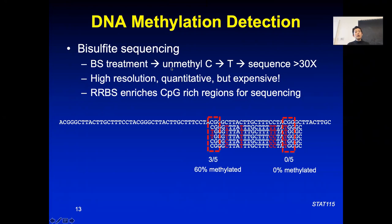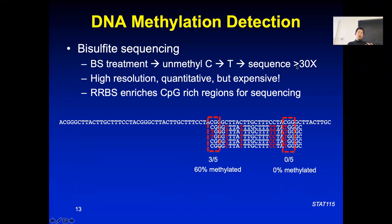During this bisulfite treatment, all the unmethylated C's will be converted to a T. Then you sequence the bisulfite-treated DNA. You have to sequence the genome to a significant coverage — potentially over 30x coverage.